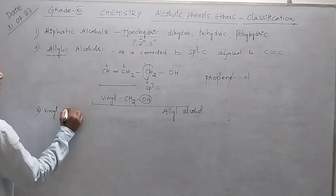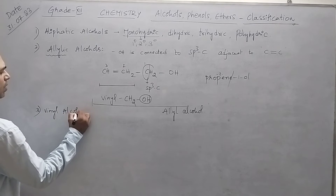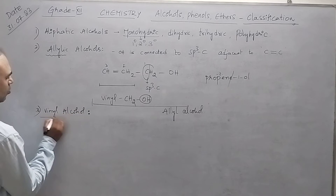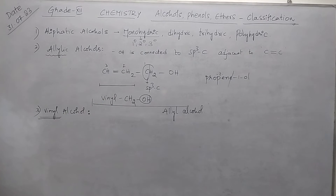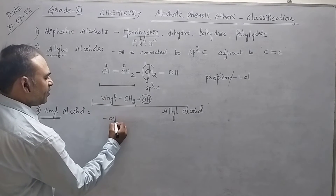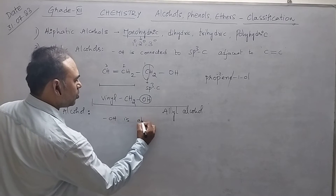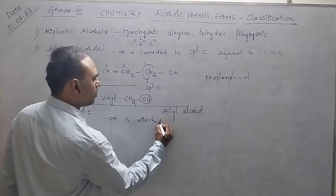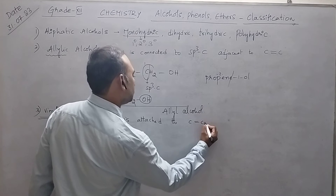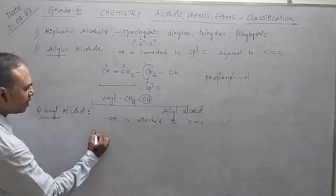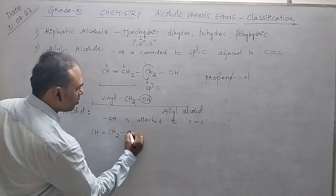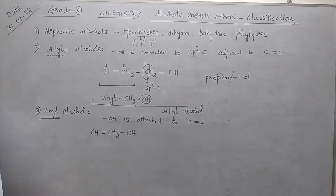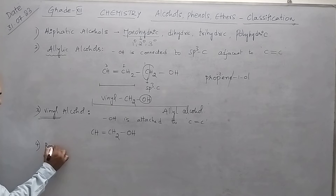The third type is vinyl alcohol. The vinyl group is CH2=CH–. In vinyl alcohol, the OH group is directly attached to the C=C carbon, giving the structure CH2=CH–OH. This is known as vinyl alcohol.